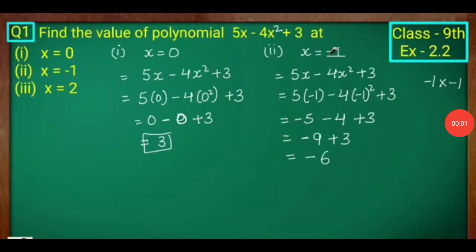Good morning students. Today we are going to start exercise 2.2, question number 1: find the value of the polynomial 5x minus 4x squared plus 3 at x equals 0, x equals minus 1, and x equals 2.